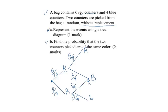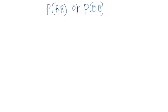The probability of red followed by red is 6 over 10 multiplied by 5 over 9. So we have 6 over 10 multiplied by 5 over 9. Or means addition, so plus.